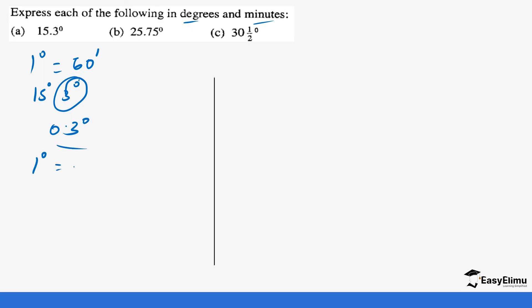We say one degree equals 60 minutes, so what about 0.3 degrees will be how many minutes. If you take 0.3 times 60 which will give us 18 minutes, so we can say this is 15 degrees and 18 minutes.